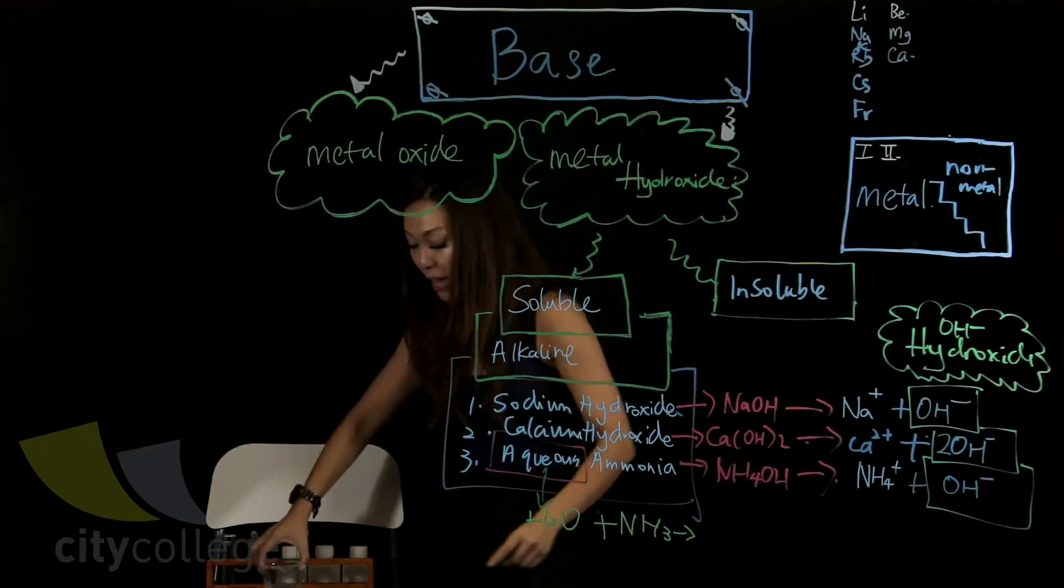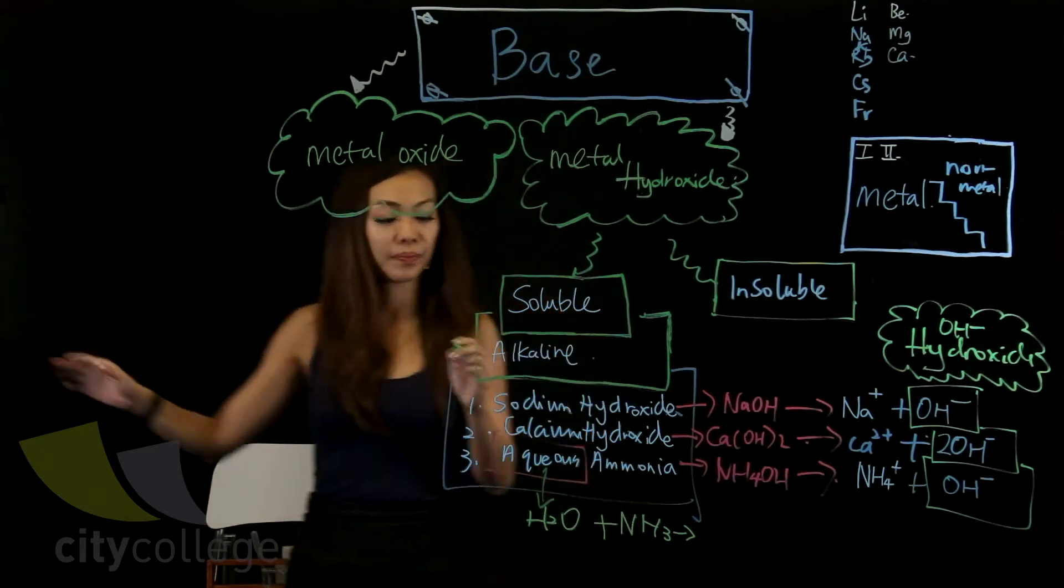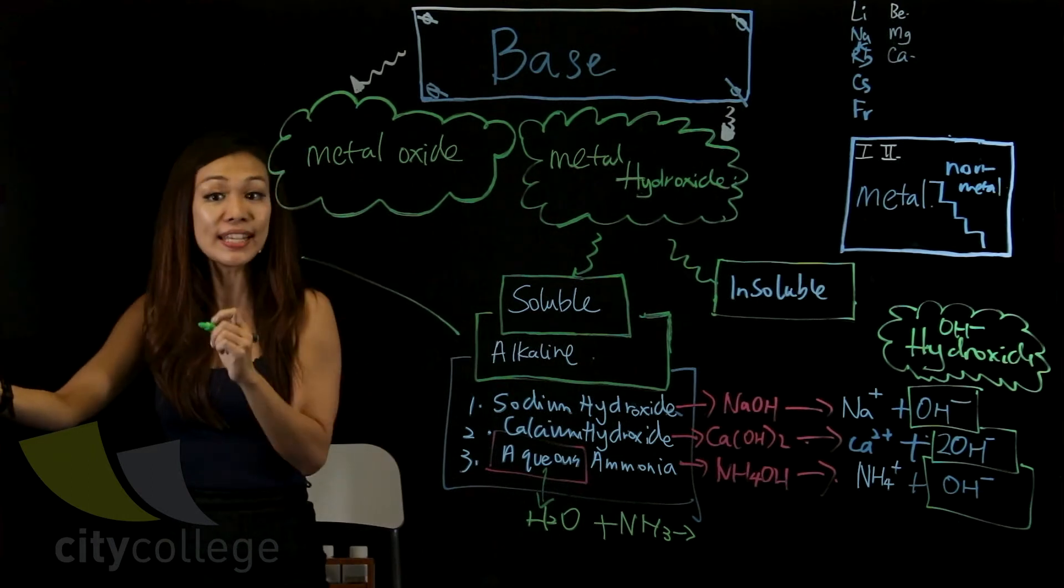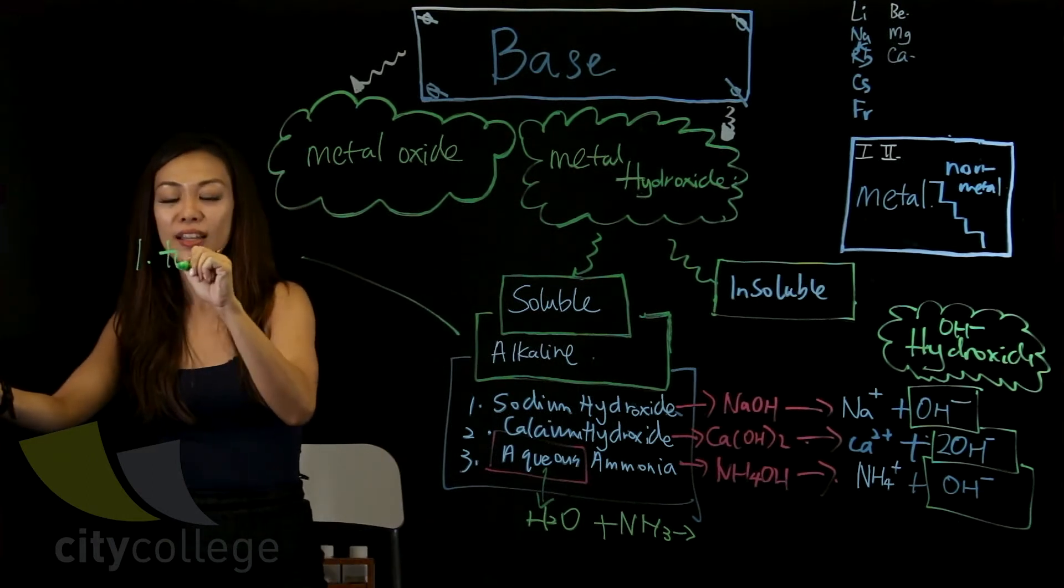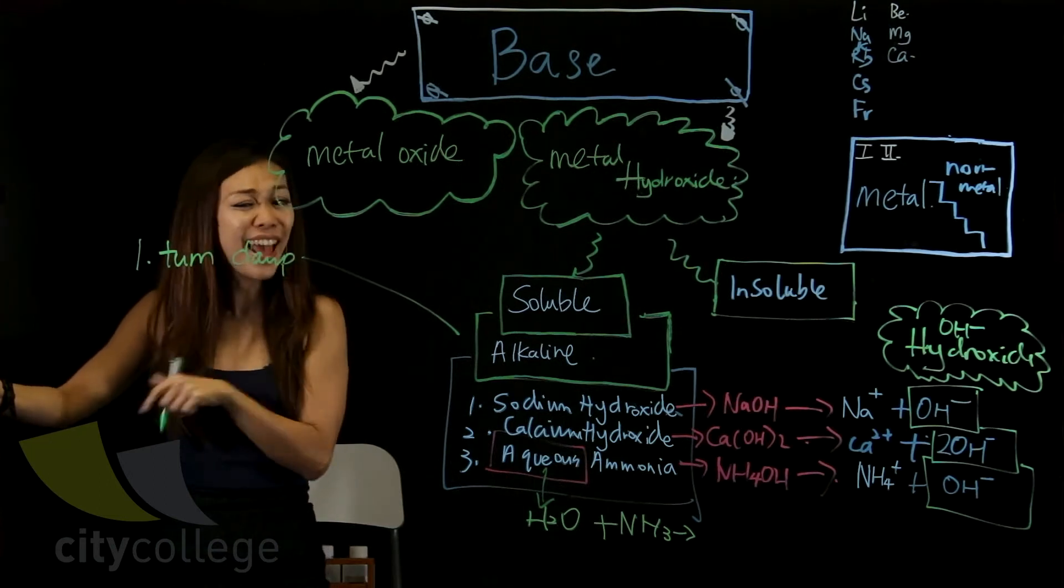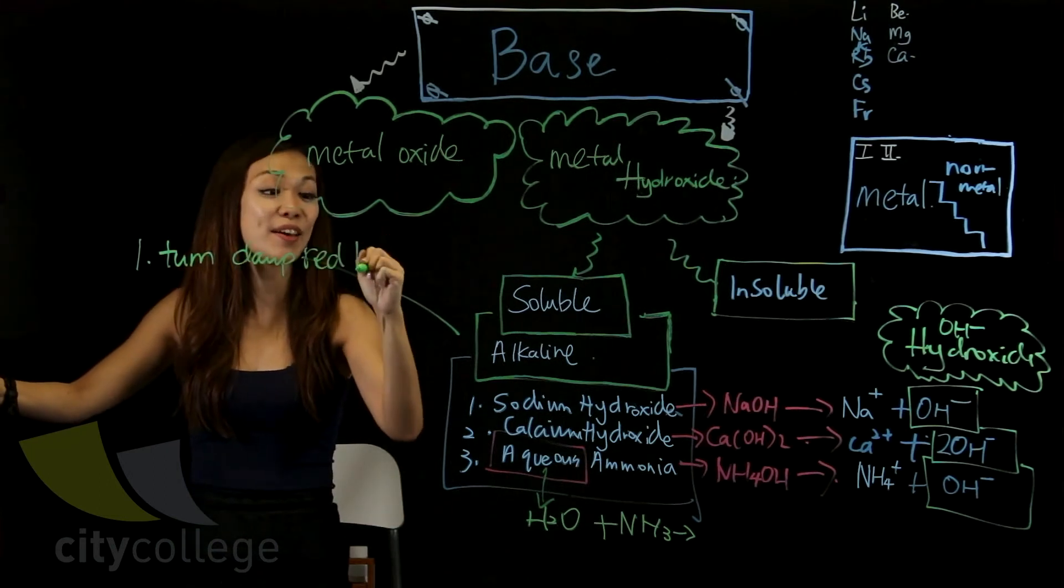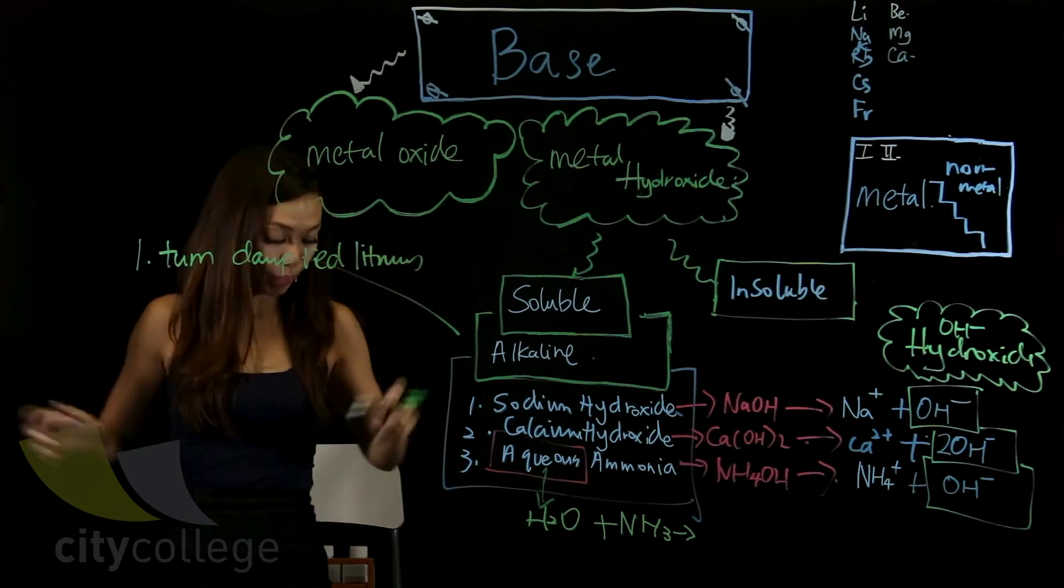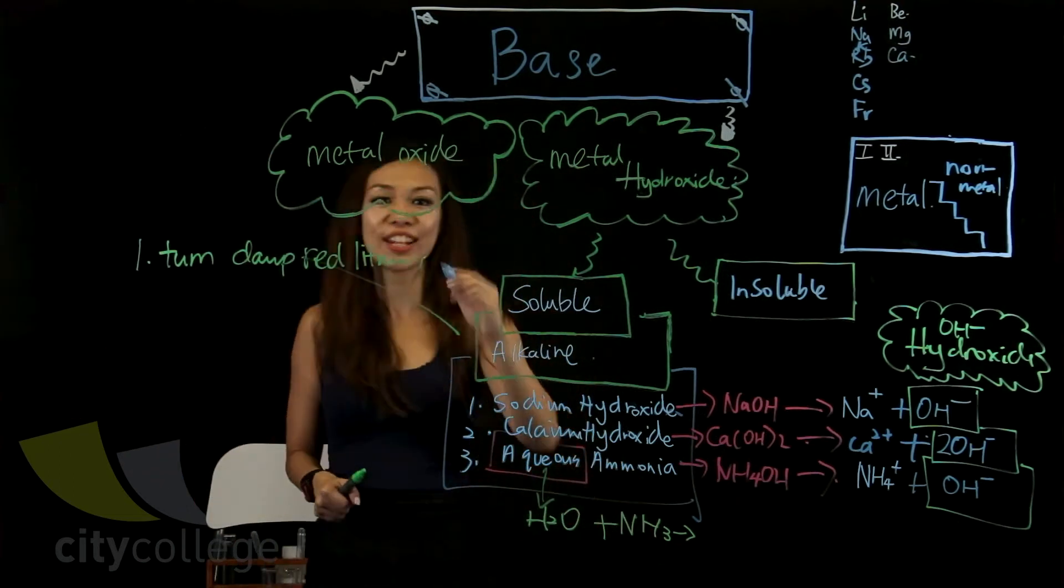So I can safely say one of the properties here is it turns what? Turn, then, what colour is that? Red litmus blue. So I'm going to use a blue colour so that you can see.